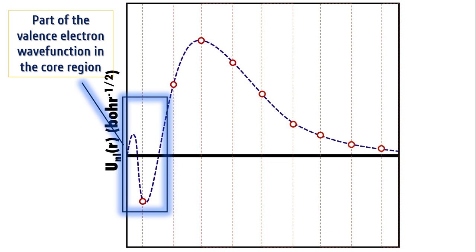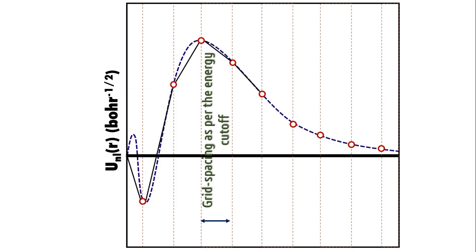Since the wave function of the valence electron itself is highly oscillatory near the core, the representation of these oscillations would be very poor using the grid that we have agreed upon, and thereby it will underestimate the accuracy and the numerical stability of the calculations. Here in this picture you can see actually how the wave function would look like using the grid that originates from a lower energy cutoff.